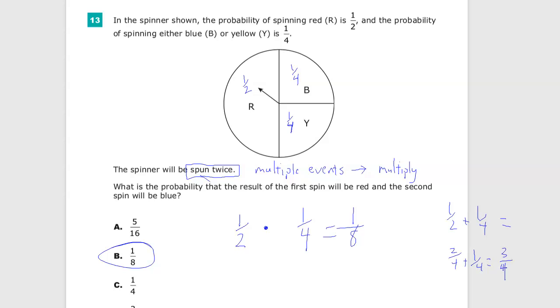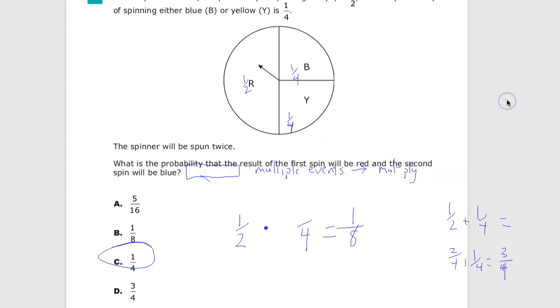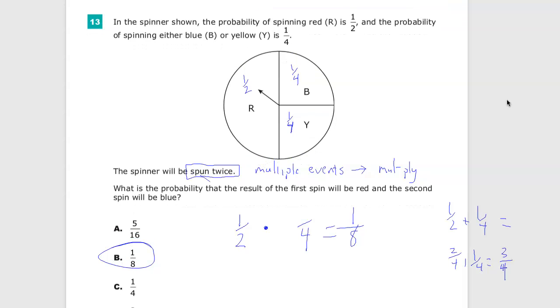3/4 is the answer for D. I realize it's off the screen now, but one of the answer choices is like that. So anyway, that's how that's going to go. If you have multiple events, multiply, and you should be fine.